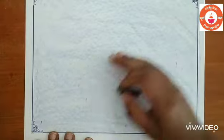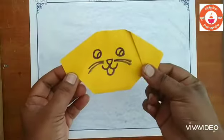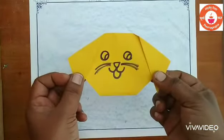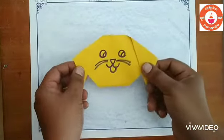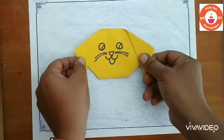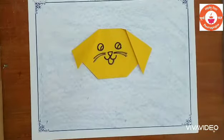After coloring, now take the paper folding of dog's face which we did in the online class. Ok children? Now stick it on the colored sheet.